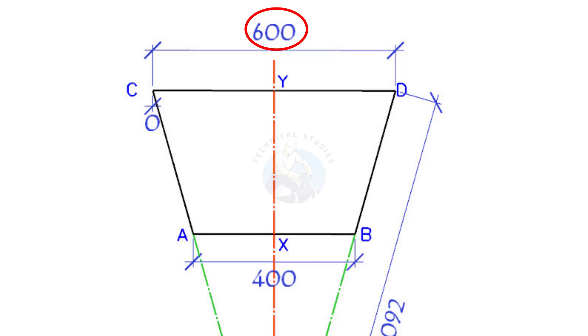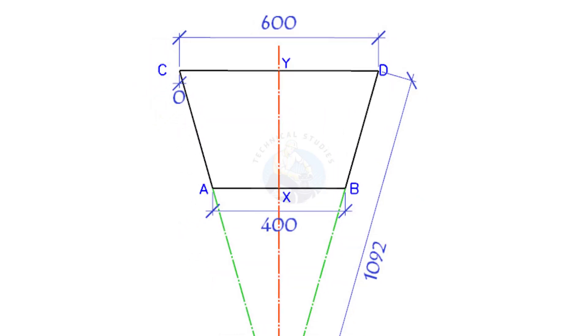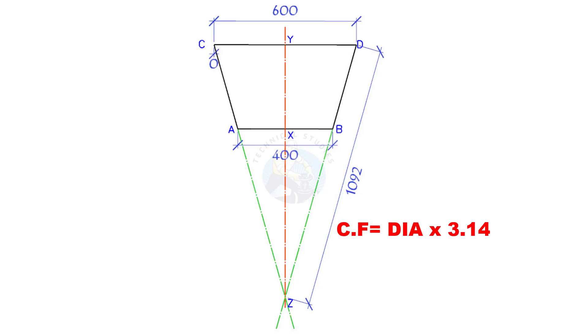Calculate the CD circumference. Diameter multiplied by 3.14, or pi, is the formula to calculate the circumference of a circle. 600 multiplied by 3.14 is 1884. So topside circumference is 1884. Note down this.